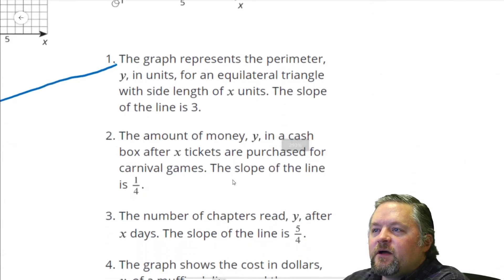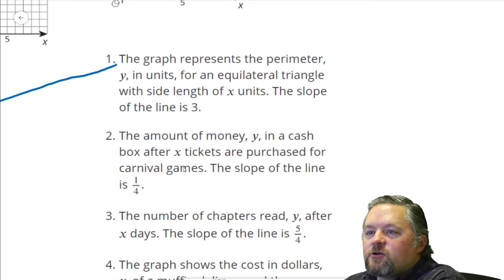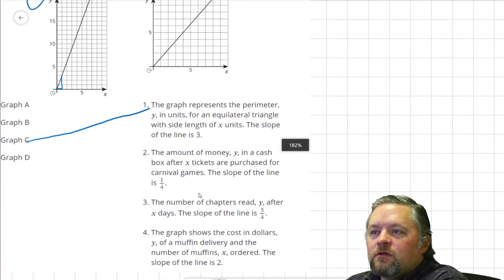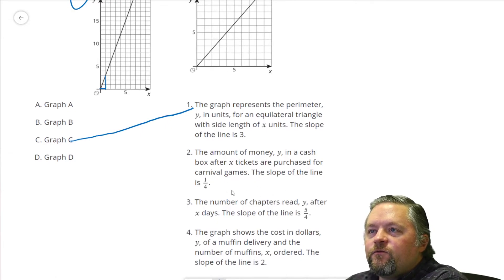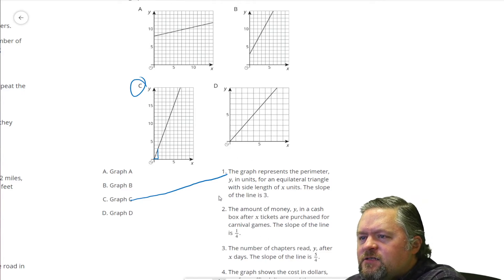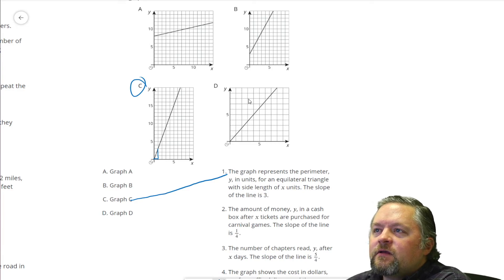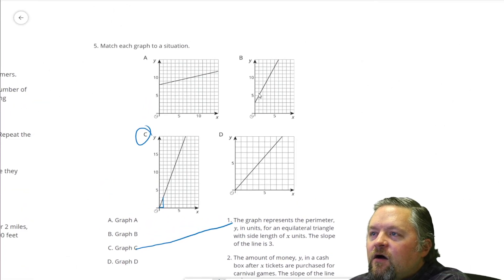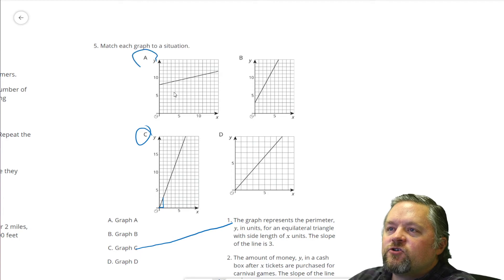What's next? The amount of money Y in a cash box after X tickets are purchased for the carnival games. The slope of the line is 1/4. So, we need a slope of 1/4. And amount of money in the cash box. There could be money at the beginning or there could have been no money. This doesn't really say. But we do know that we need a slope of 1/4. 1 over 4. So, rise of 1, run of 4. D is our other one that goes through 0. That doesn't look like a rise of 1 and a run of 4. B also looks like it's steeper than that. But, A goes up 1 over 4, up 1 over 4. So, number 2 is A.